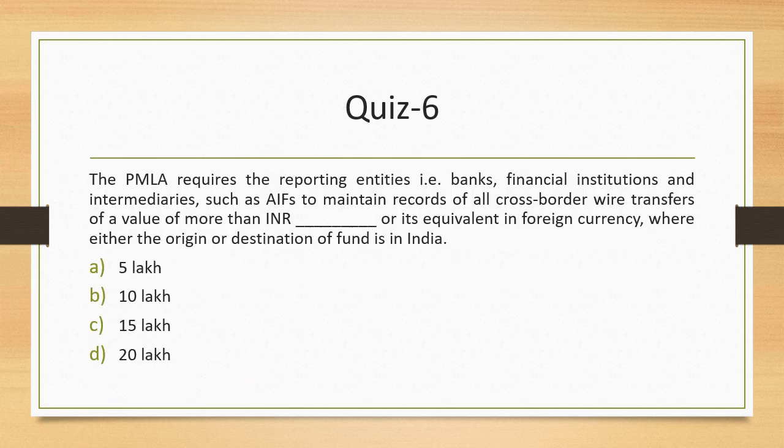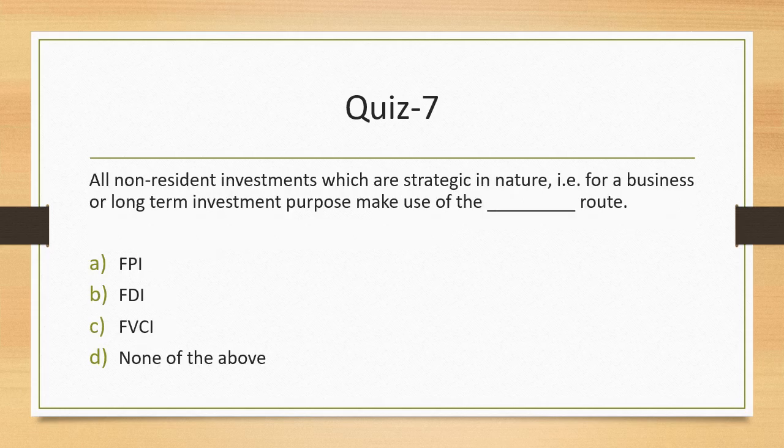Question 6: PMLA requires that reporting entities — banks, financial institutions, and intermediaries such as AIFs — maintain records of all cross-border wire transfers, meaning money moving from India to outside or vice versa, of value more than how much? It is not 10 lakhs or 20 lakhs — the correct answer is 5 lakhs. This threshold is set because wire transfers can be used for money laundering, and a lower threshold gives regulators better oversight.